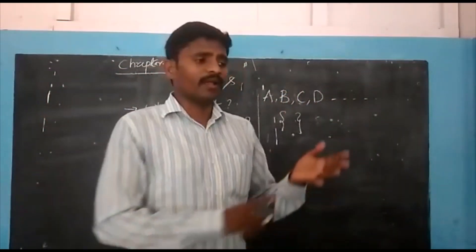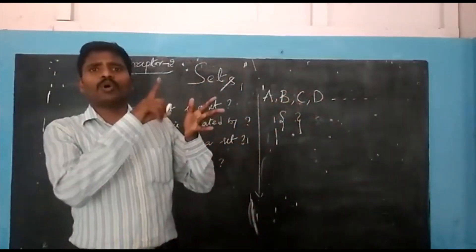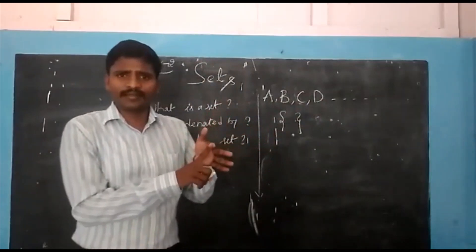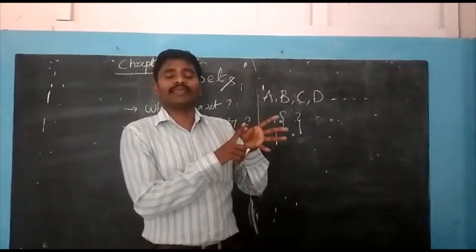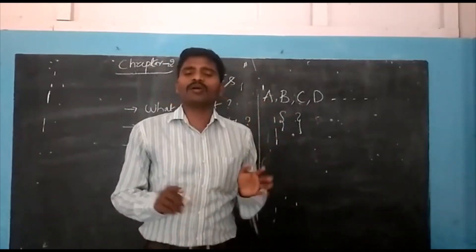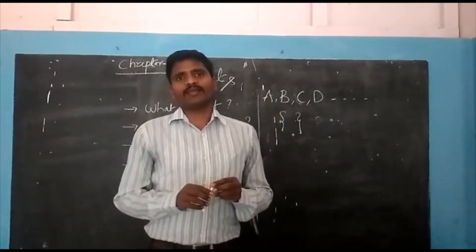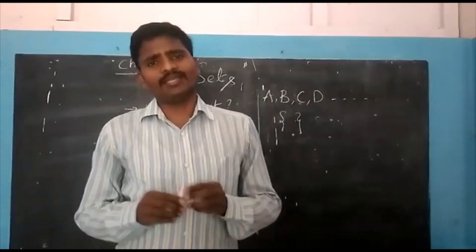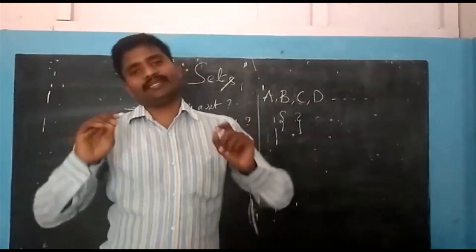All types of numbers are also known as sets, like natural number set, whole number set, integer set, rational number set, irrational number set, and finally real number set. We discussed this in the first chapter.